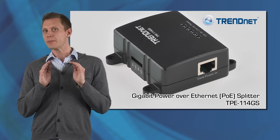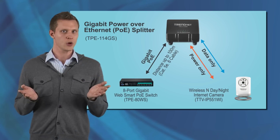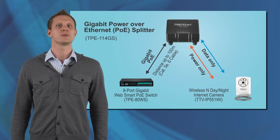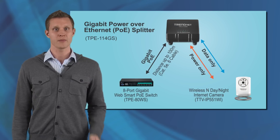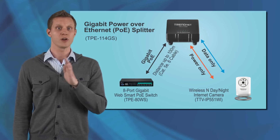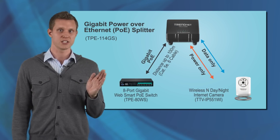Let me paint a picture for you. Say you want to install a non-PoE IP camera in a remote location in your warehouse. If you have a gigabit PoE switch, simply run a PoE Ethernet cable from the switch to the point of the camera installation.